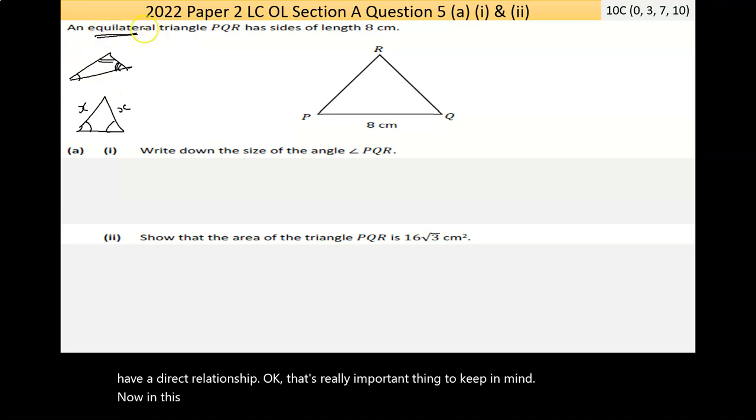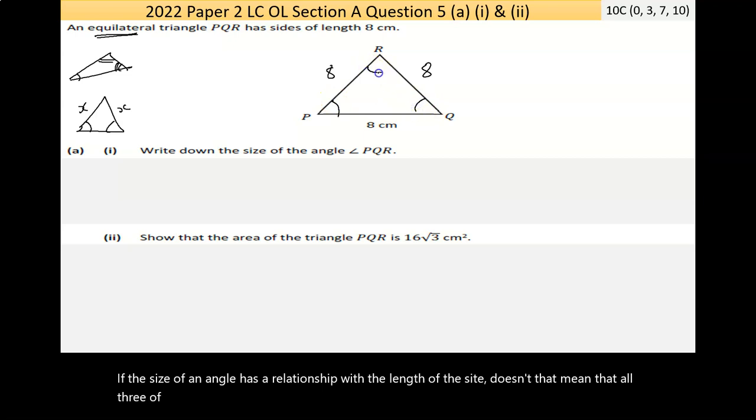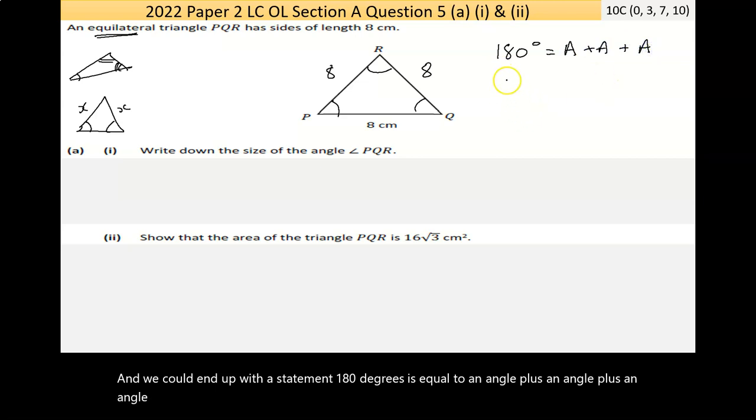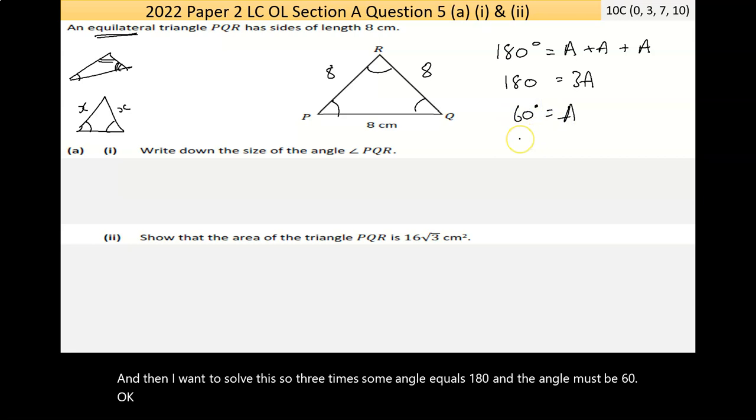In this question it says an equilateral triangle PQR has sides of length 8. So if that's 8 here, it's 8 here, it's 8 here. Now, if the size of an angle has a relationship with the length of the side, doesn't that mean that all three of these angles must be the same? We can end up with a statement: 180° = A + A + A. If we follow algebra on that, A + A + A is 3A, and then I want to solve this. So 3 times some angle equals 180, the angle must be 60.